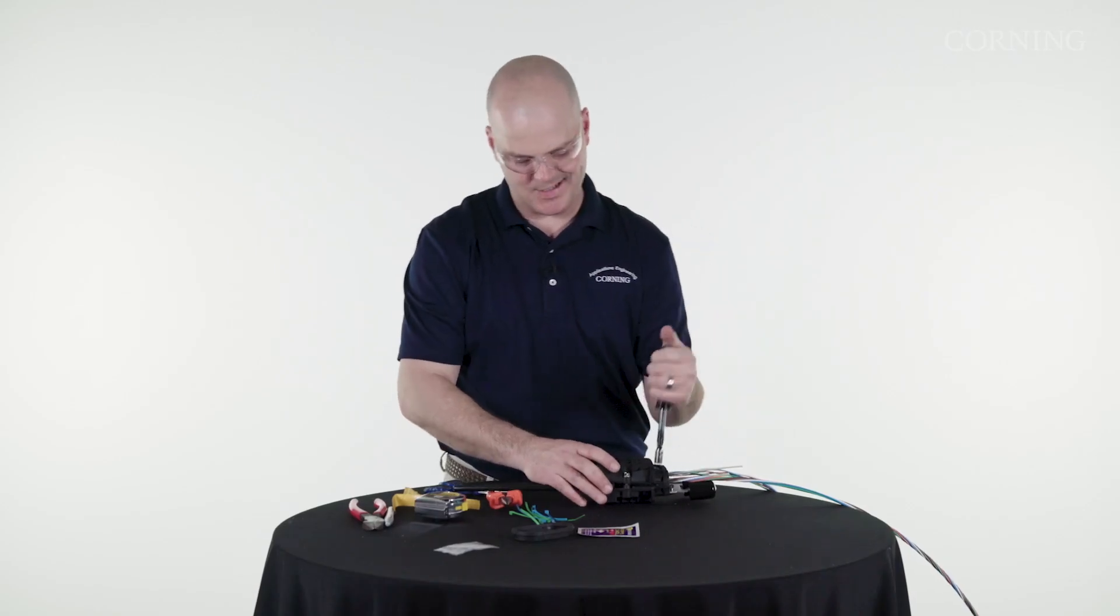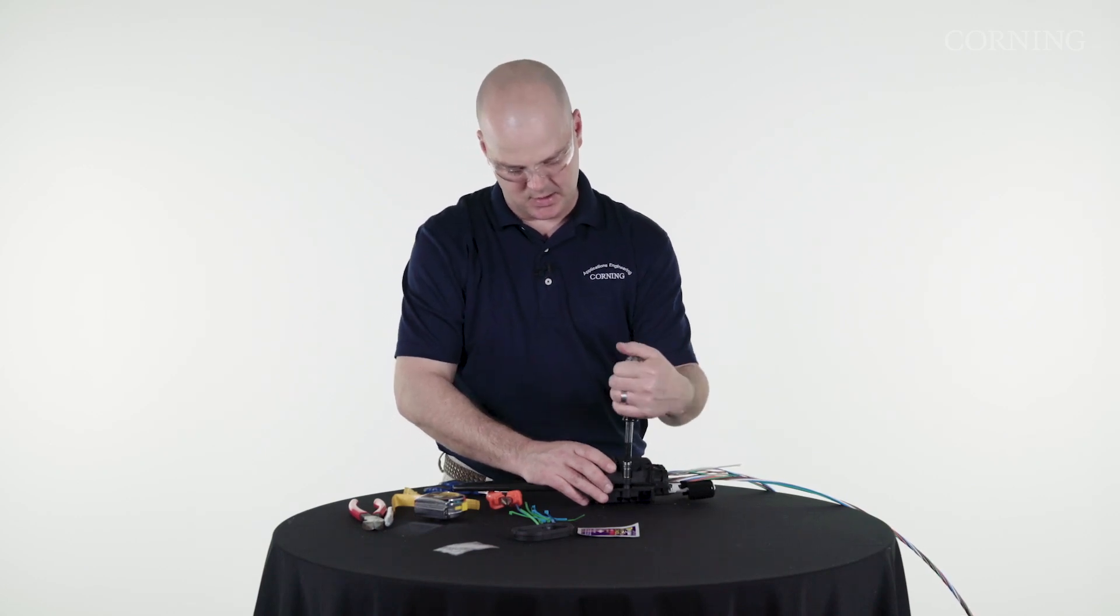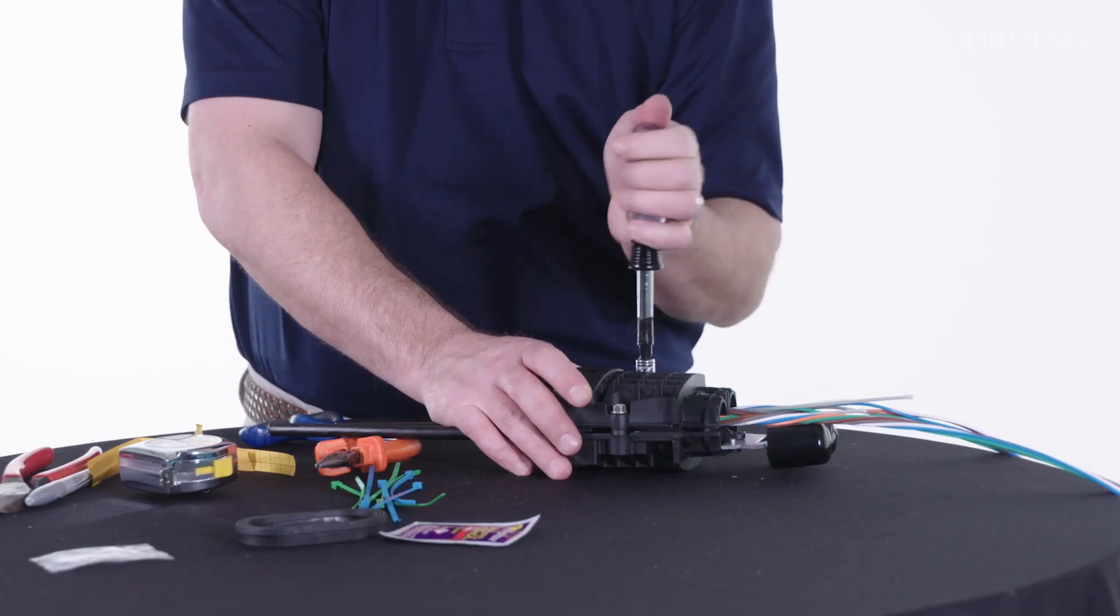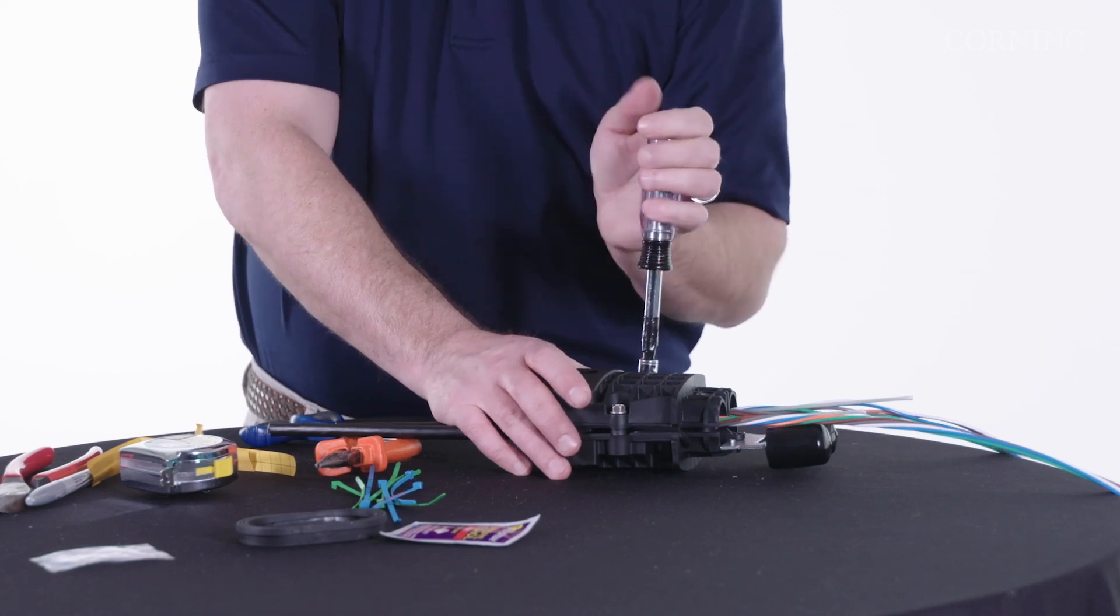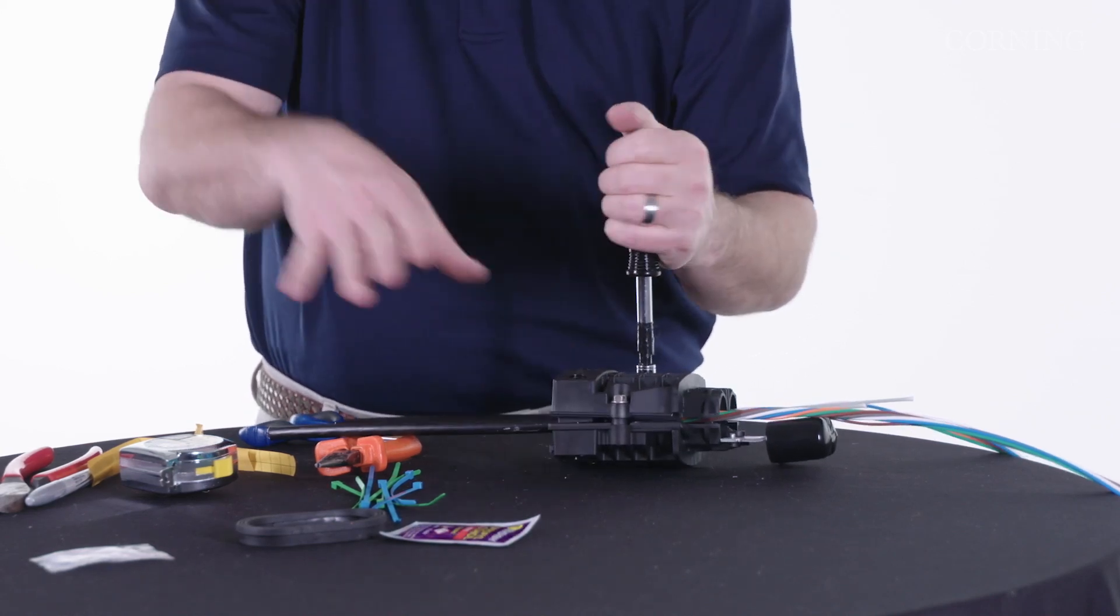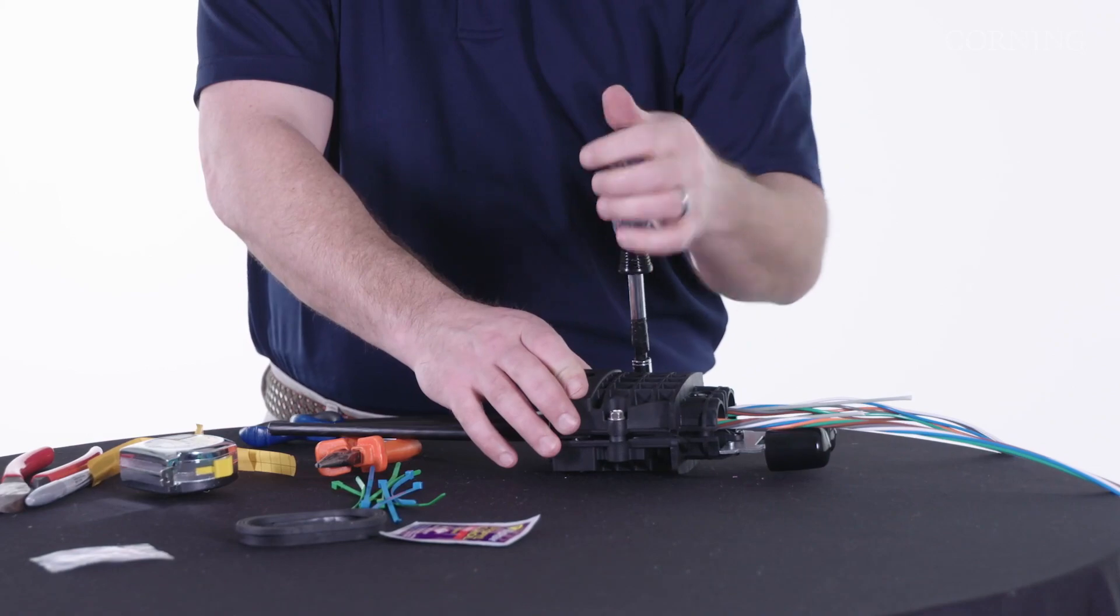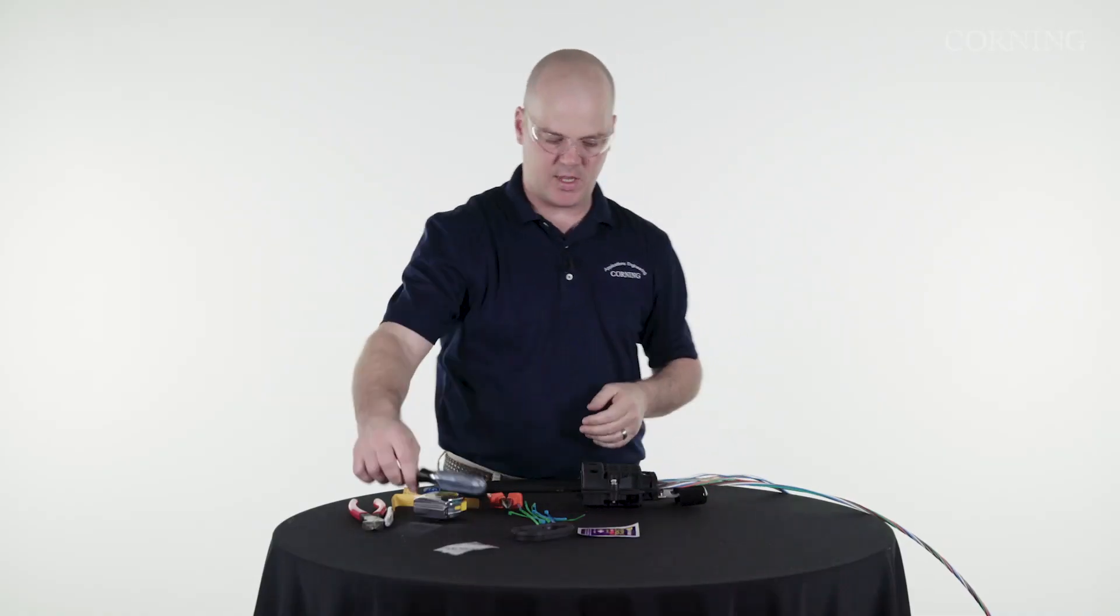These bolts are torqued to 60 inch pounds as you see in the instructions. Just so you know, what you're doing is you're essentially compressing that tape and it's filling the voids so it's spreading out so you do need to torque this down. Now you've built your double E cam.